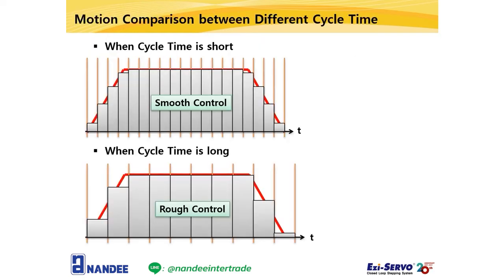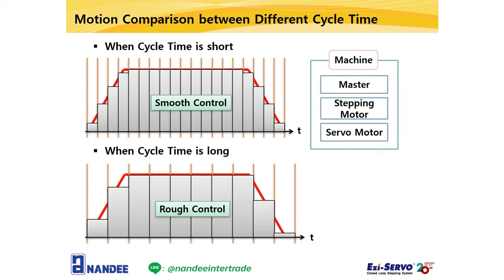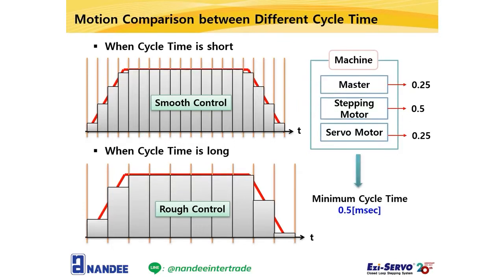Why is the minimum cycle time important? For example, in synchronous control, if the cycle time is short, smooth and high precision control is possible; but if the cycle time is long, smooth operation is not possible. Depending on machine requirements, stepping motors and servo motors are often used together. In this case, the cycle time should match the longer one. Therefore, many companies are trying to reduce the minimum cycle time for high precision motion control.